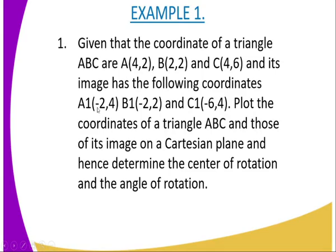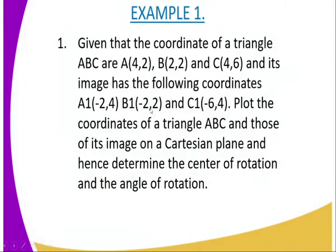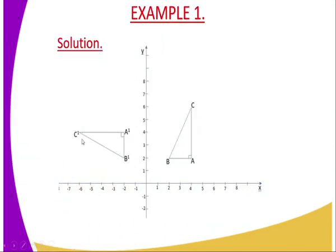Then you are told the image coordinates. The coordinates are supposed to be A1 at negative 2, 4 — you can see it is well plotted. Then we have B1, that is the image of B, at negative 2, 2 — you can see it was plotted at negative 2, 2. And C1 is supposed to be at negative 6, 4 — you can see on the diagram it is at negative 6 and 4.